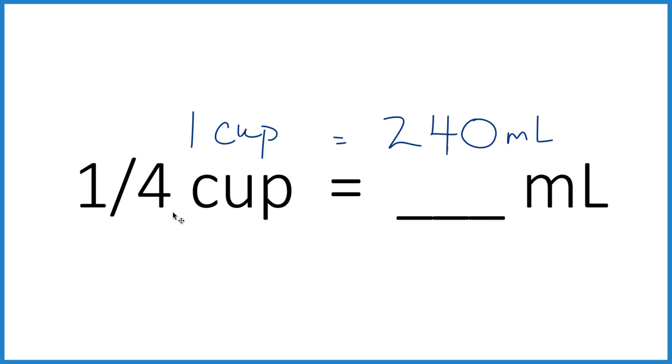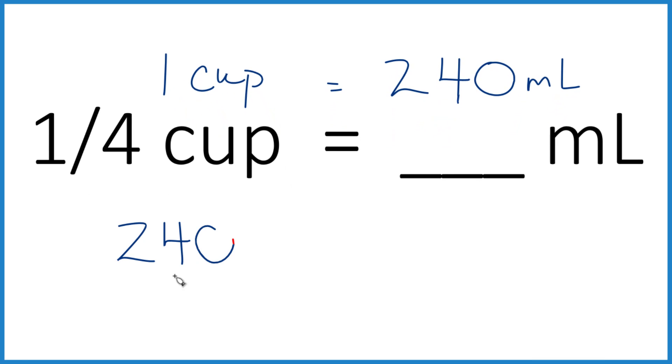One cup is 240. We want one-fourth of a cup. Just divide by four. And 240 divided by four is 60. So there are 60 milliliters in one-fourth of a cup.